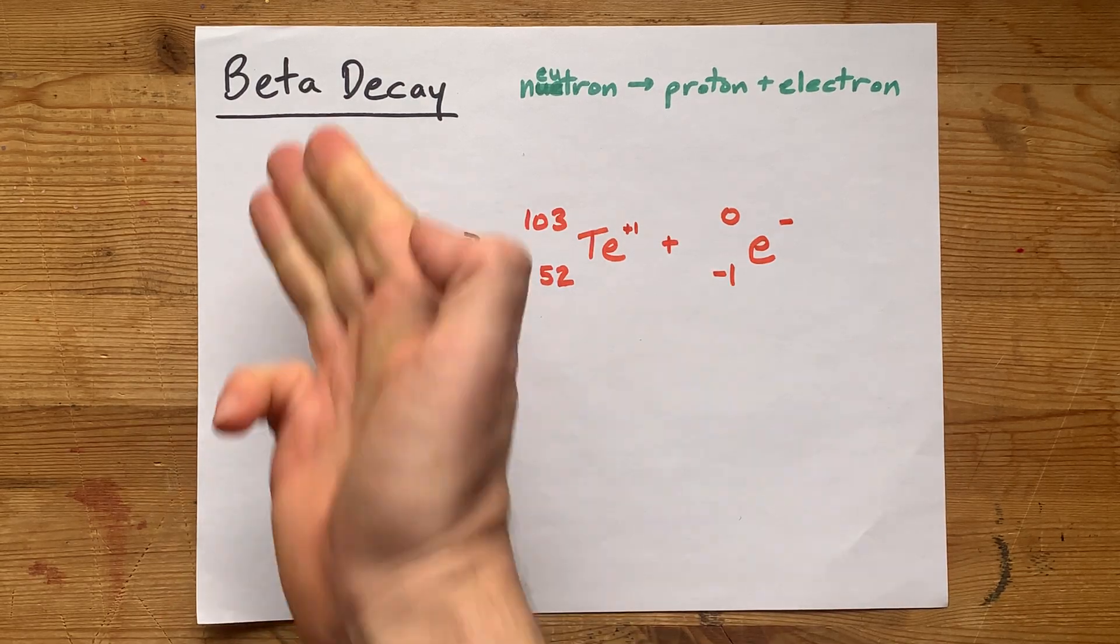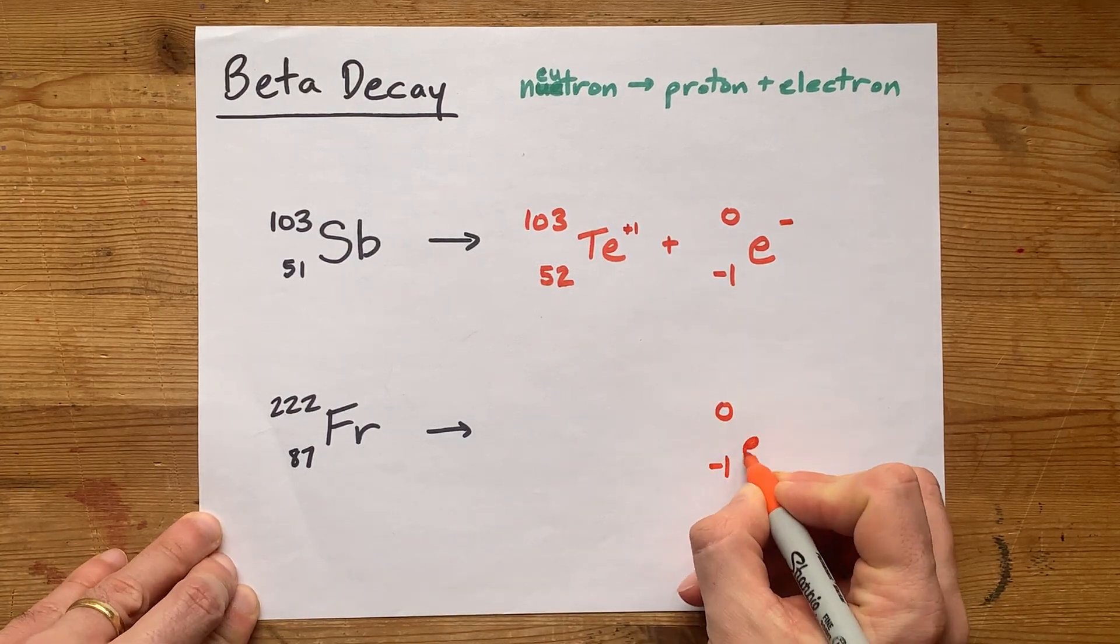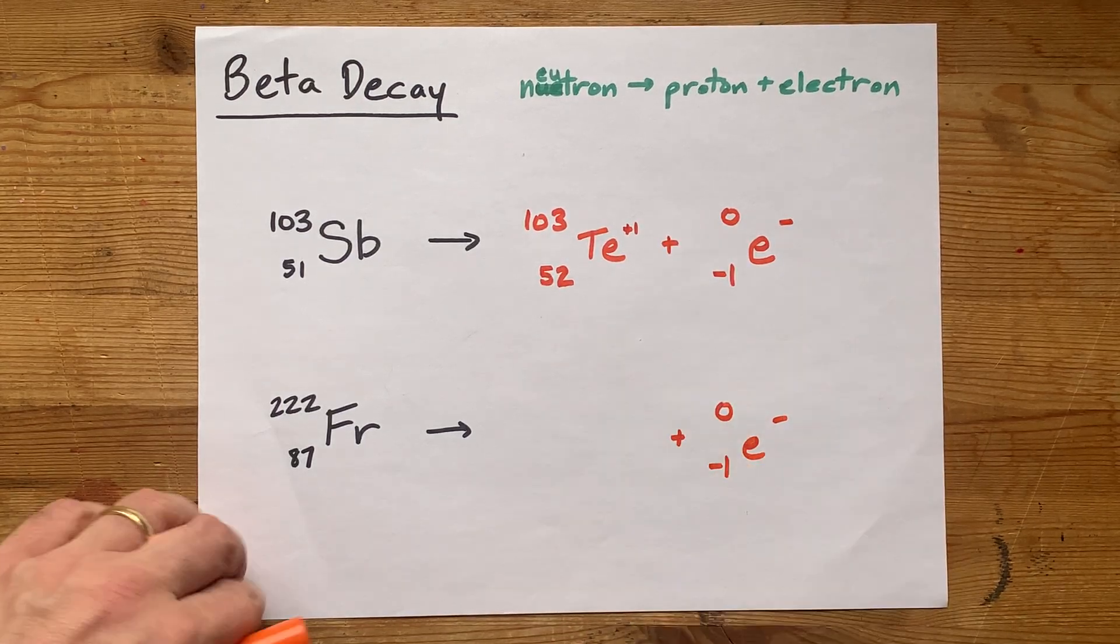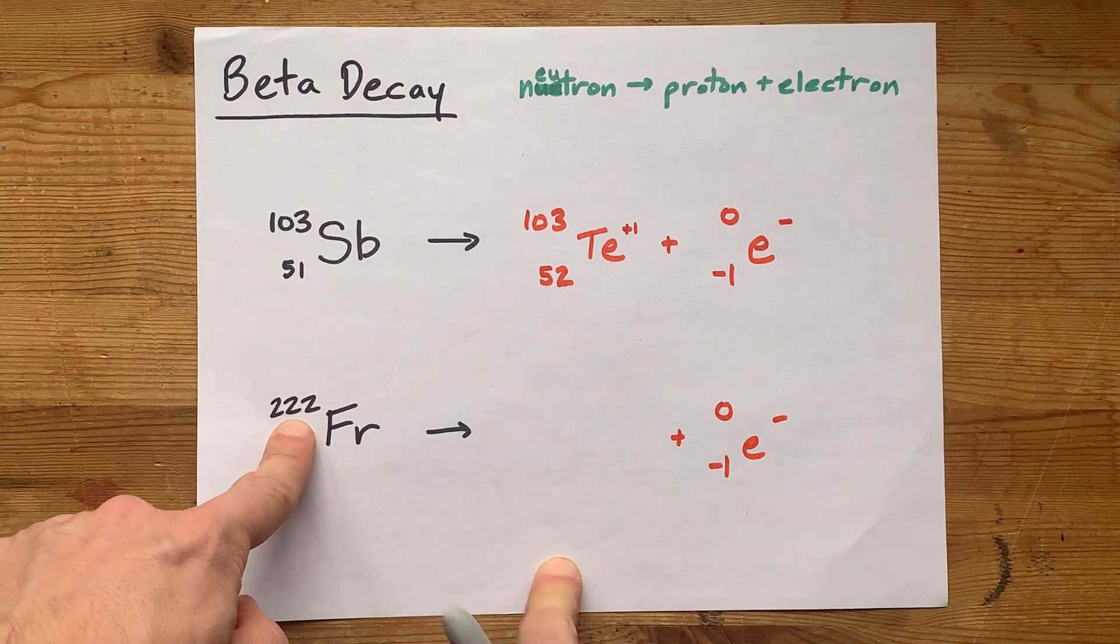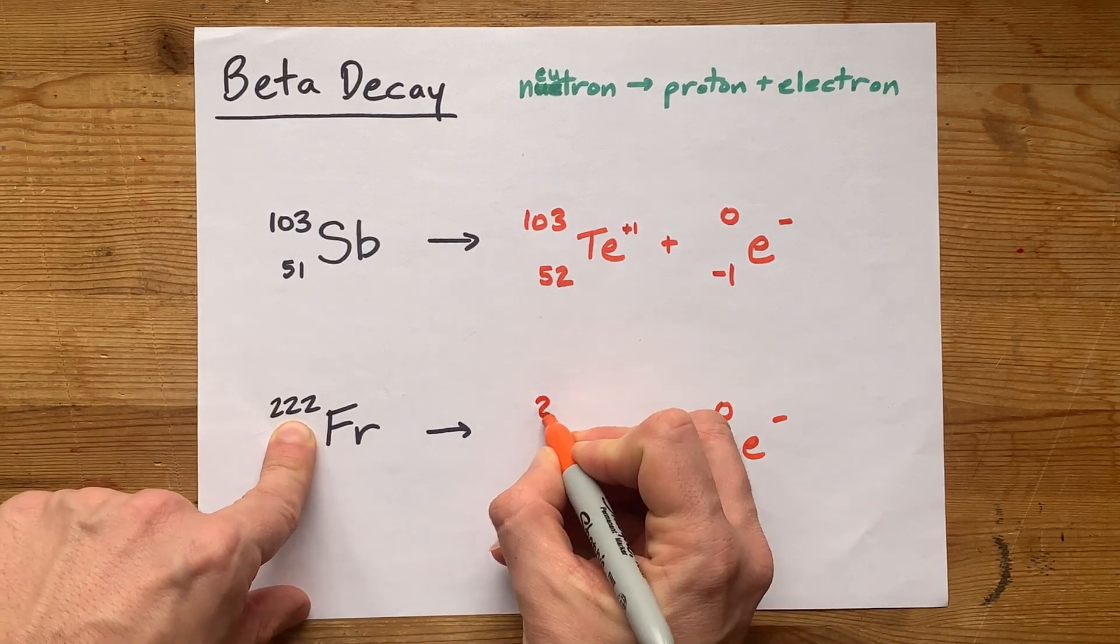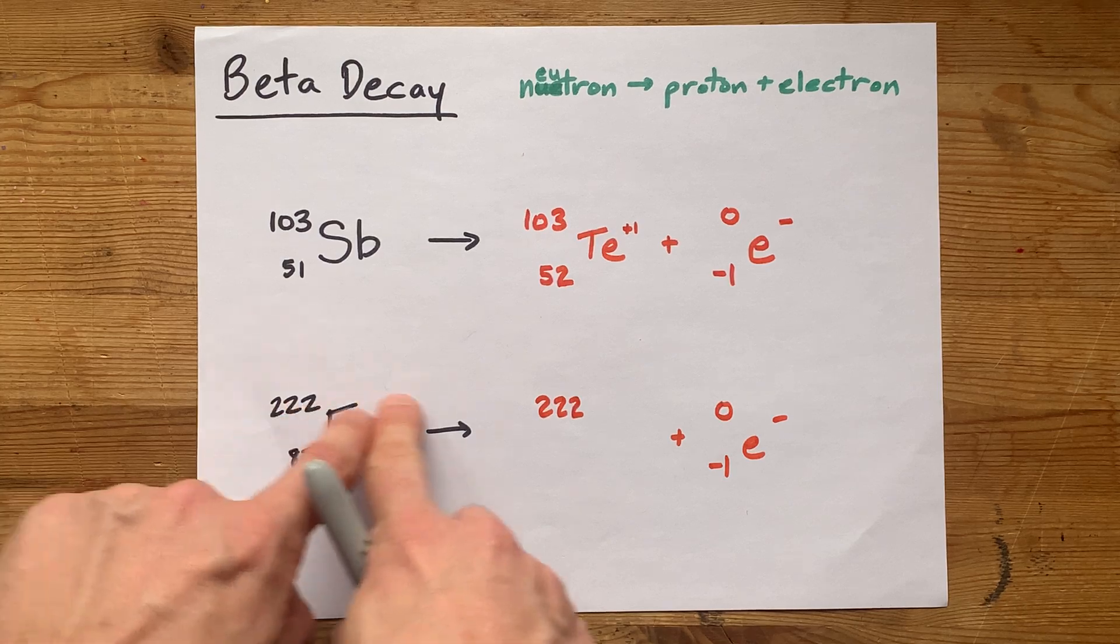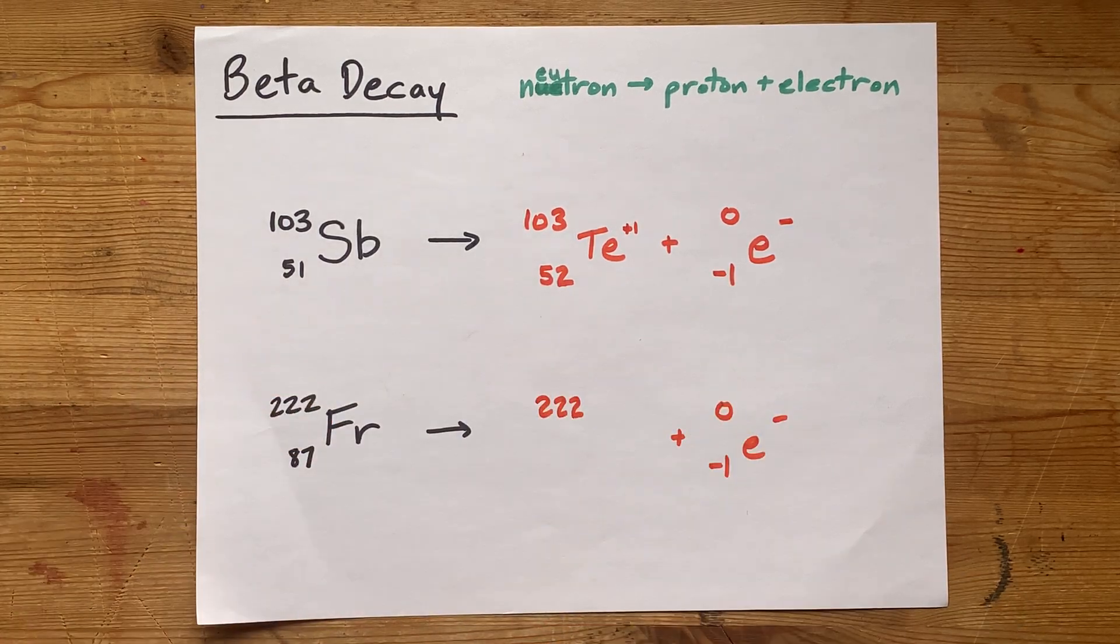Let's do that again. Beta decay means you're going to get a beta particle out of it. There it is. Now, 222 is going to be equal to zero plus whatever number goes there. Oh, it's still 222, because the neutron broke apart to give a proton with roughly the same mass.